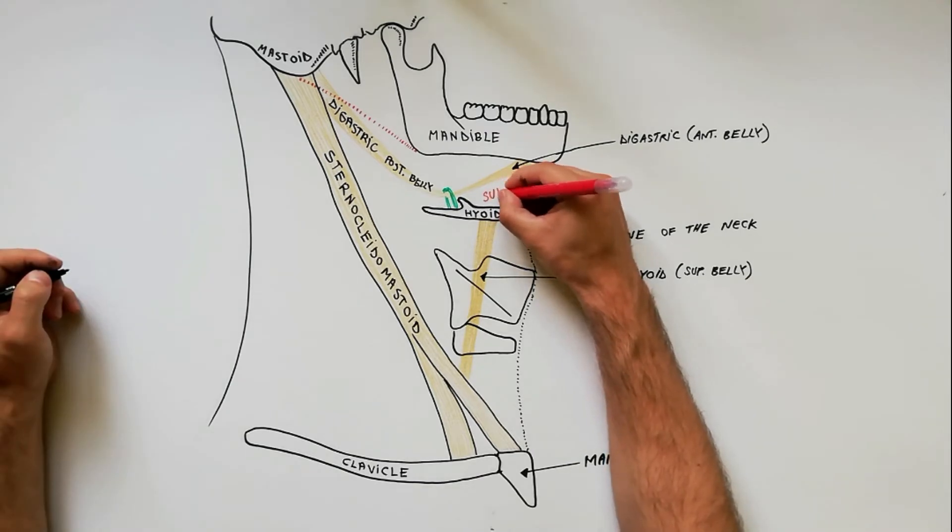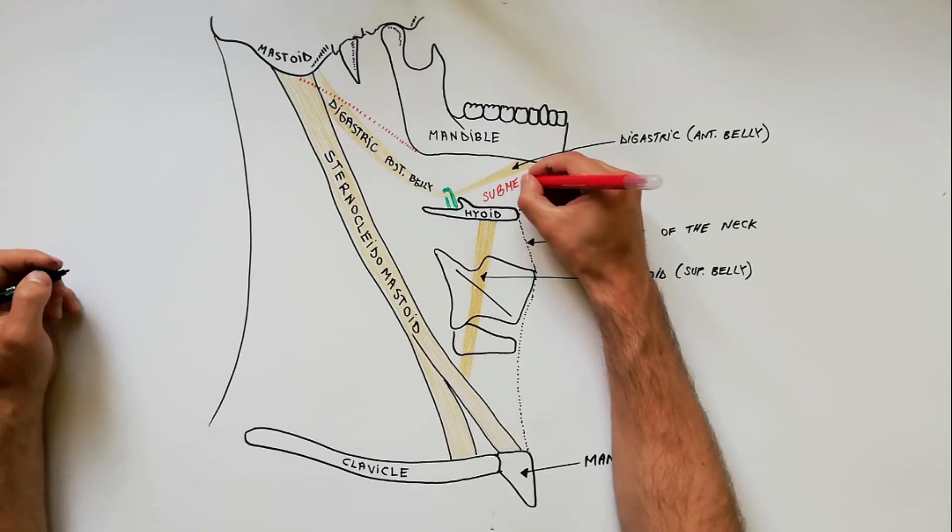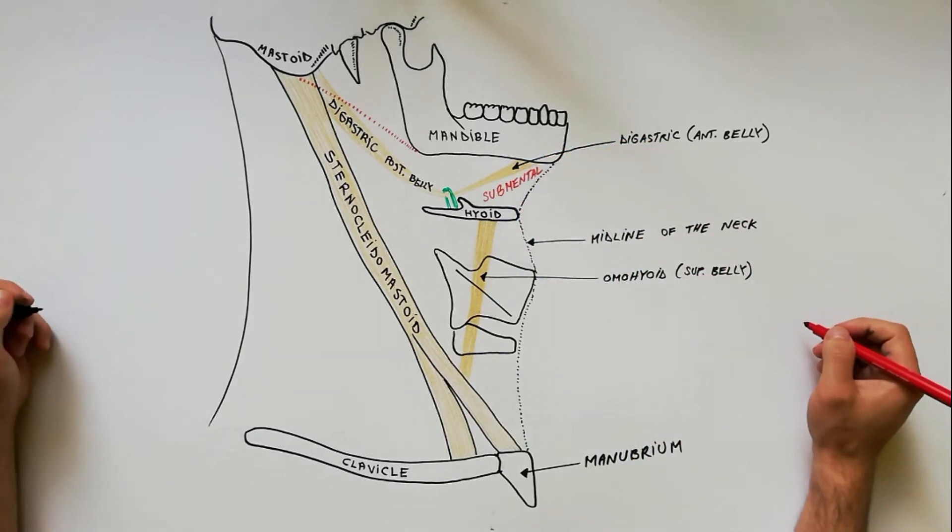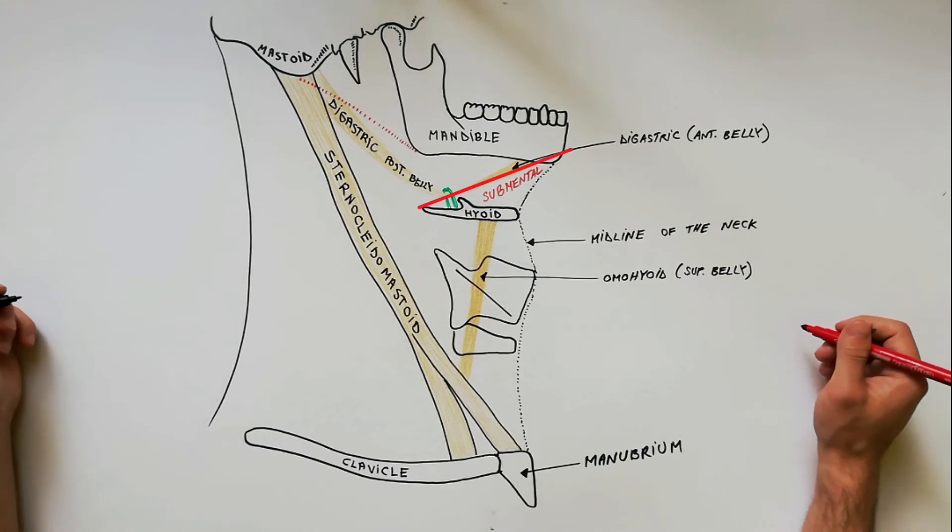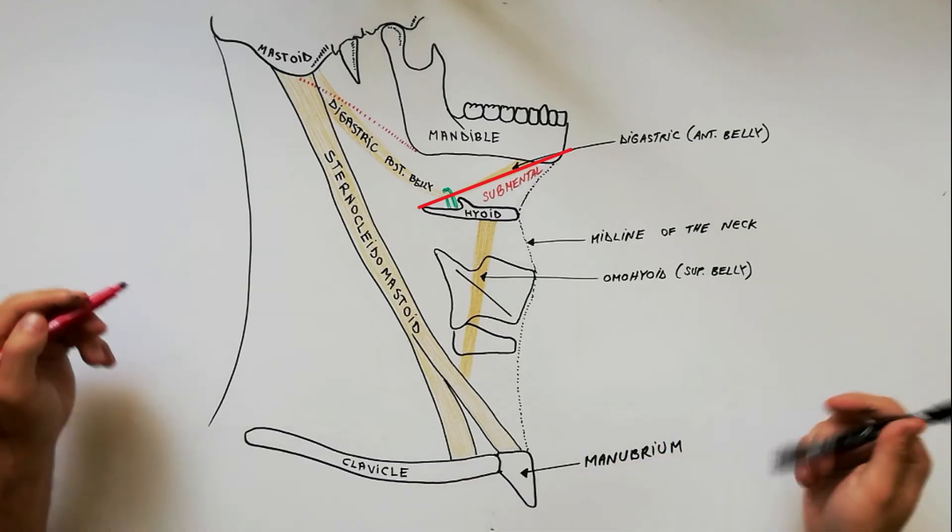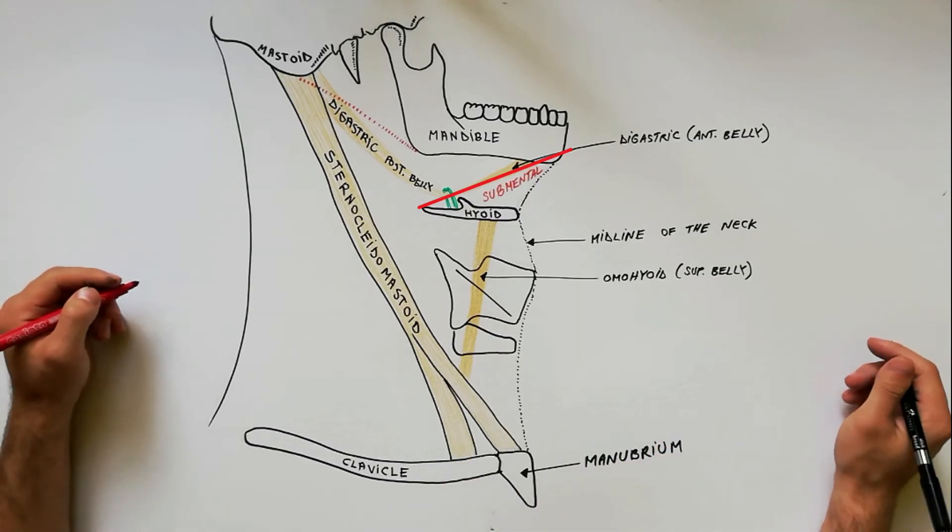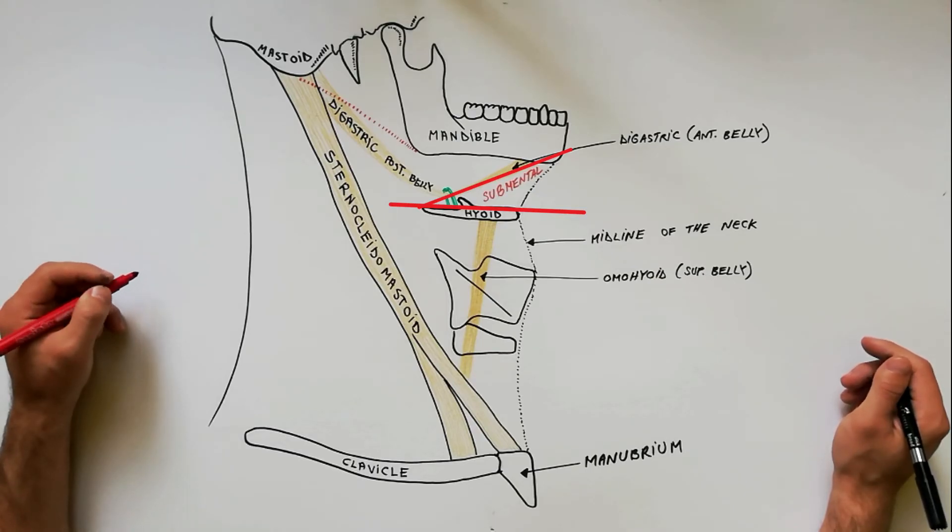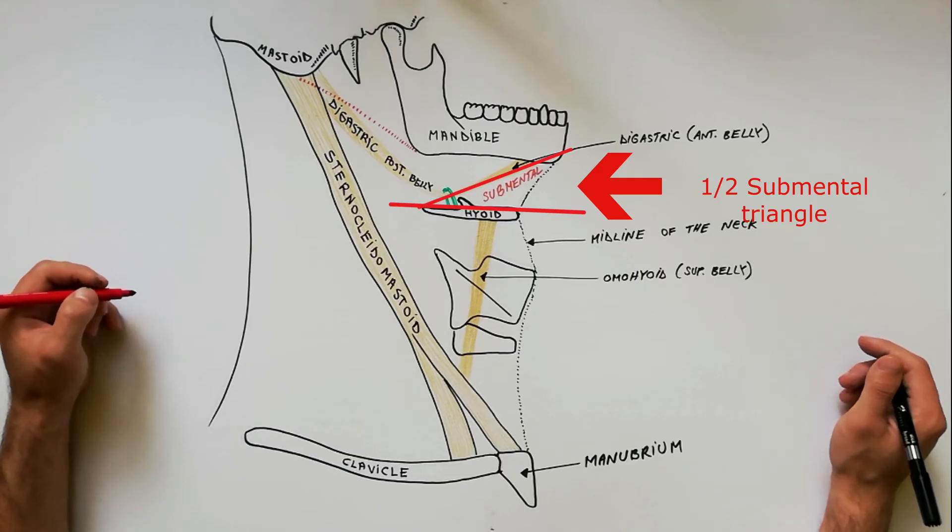The submental triangle is the only unpaired triangle of the four divisions of the anterior triangle of the neck. It is bordered laterally by the right and left anterior bellies of the digastric muscles. Inferiorly it is limited by the body of the hyoid bone. On this diagram we can observe half of the submental triangle.